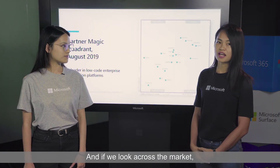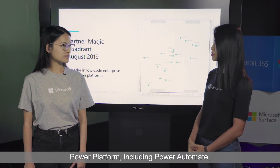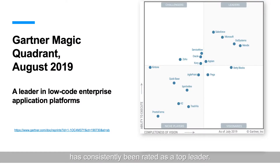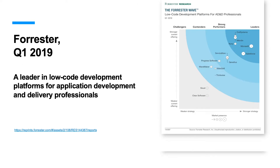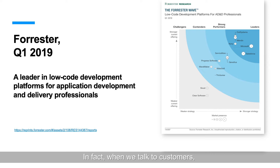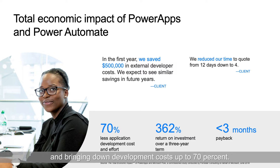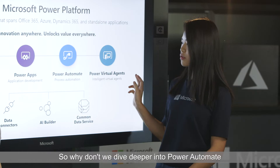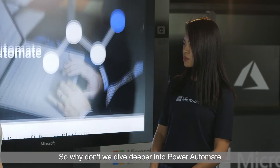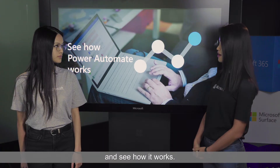If we look across the market, Power Platform, including Power Automate, has consistently been rated as the top leader. This is reflected in the Gartner report as well as the Forrester report. In fact, when we talk to customers, we see that they're realizing ROI of more than three times and bringing down development costs up to 70%. So why don't we dive deeper into Power Automate and see how it works?